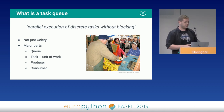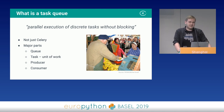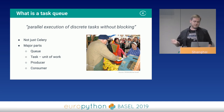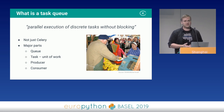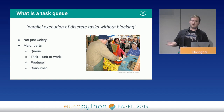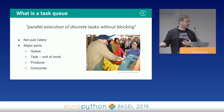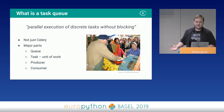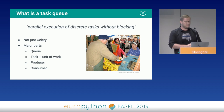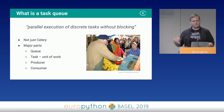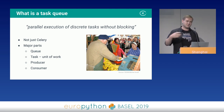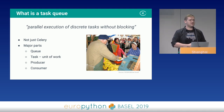The major parts of a task queue are the queue itself, the task that needs to be done, the producer of the task, and the consumer. You can imagine it like being at a market trying to buy a banana: you have the queue, the task to buy the banana, and the producer and consumer as the customer and the seller.